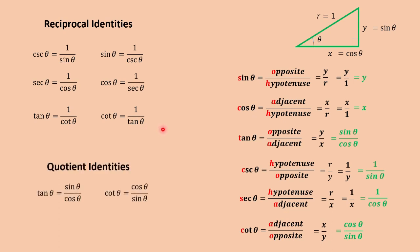We also have quotient identities. Tangent theta is equal to sine theta over cosine theta, and cotangent theta is equal to cosine theta over sine theta.